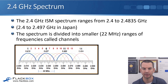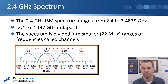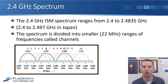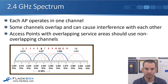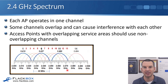Let's look at the 2.4 GHz spectrum. It's a range of frequencies — not just exactly 2.4 GHz — actually ranging from 2.4 to 2.4835 GHz, or 2.4 to 2.497 in Japan. That frequency range is divided up into smaller 22 MHz ranges called channels. A channel is just a range of frequencies that can be used for your Wi-Fi. Each access point operates on one channel, and as you can see in the diagram, some channels overlap and can cause interference — just like two radio stations on the same frequency.